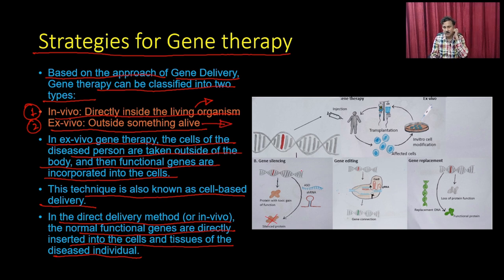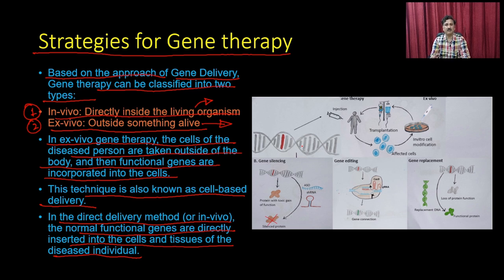In the ex vivo approach, just as in the SCID example, you isolate the T cells from the individual, manipulate them with different gene therapy approaches, and then put these modified T cells back into the patient.